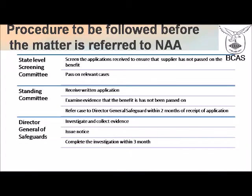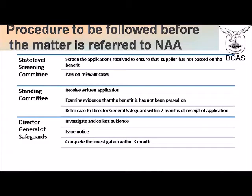The procedure to be followed if any matter is referred before the National Anti-Profiteering Authority is that first, the State Level Screening Committee is seized of the matter. They screen the applications received and ensure that only those suppliers who have not passed on the benefit are called for. They pass on the relevant cases to the Standing Committee. The Standing Committee, on receiving a written application, examines the evidence before it and assures itself that the benefits under GST have been passed on or have not been passed on. If they are satisfied the benefits have not been passed on, they refer the case to the Director General of Safeguards within two months of receipt of the application.